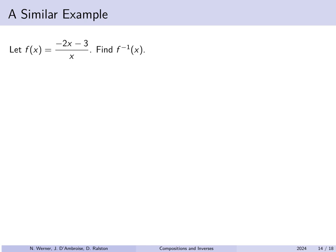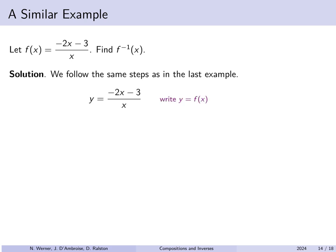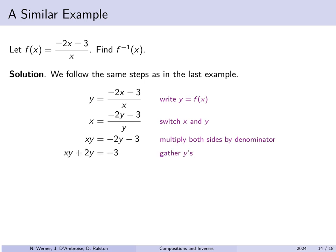Another example: f(x) equals (negative 2x minus 3) over x. Replace f(x) with y, then swap to get x equals (minus 2y minus 3)/y. Multiply both sides by y to clear the denominator: xy equals minus 2y minus 3. Move the minus 2y to the left: xy plus 2y equals minus 3. Factor out y: y(x plus 2) equals minus 3. Dividing gives f inverse(x) equals minus 3 over (x plus 2). You can verify by checking that both compositions give x.